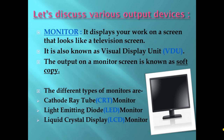A monitor displays your work on a screen that looks like a television screen. It is also known as a visual display unit, or VDU. The output on a monitor screen is known as a soft copy. The different types of monitors are: cathode ray tube (CRT) monitor, light emitting diode (LED) monitor, and liquid crystal display (LCD) monitor.